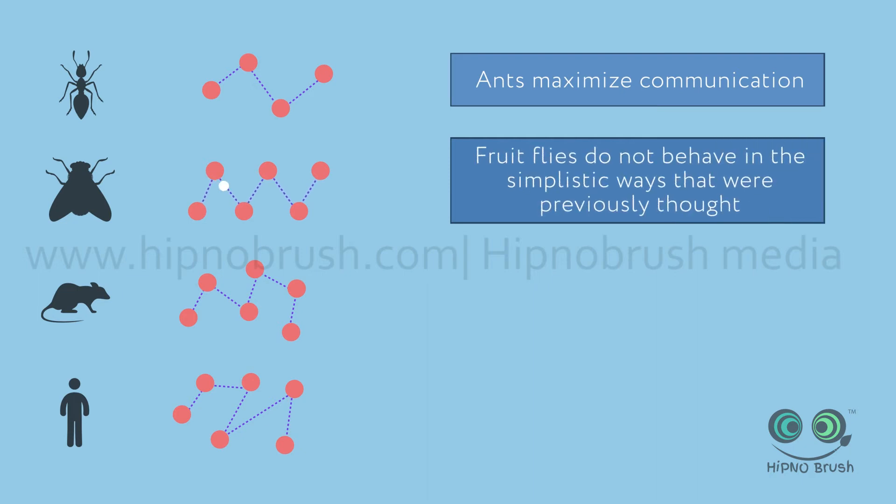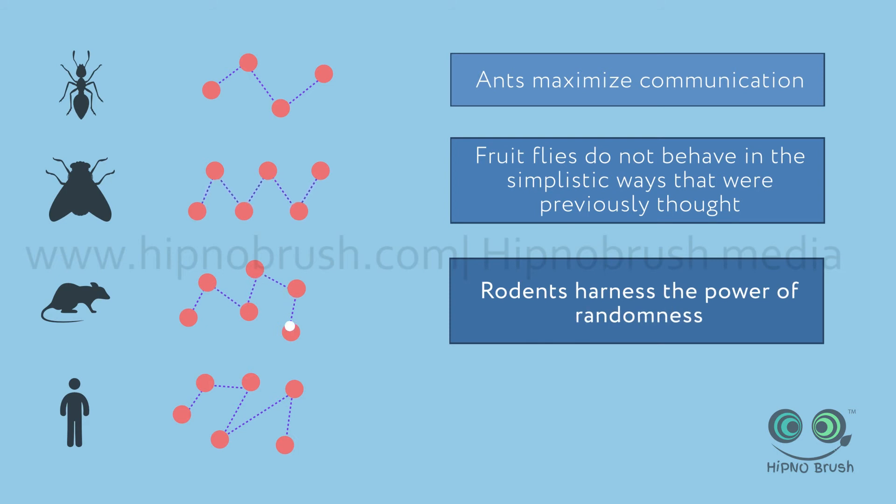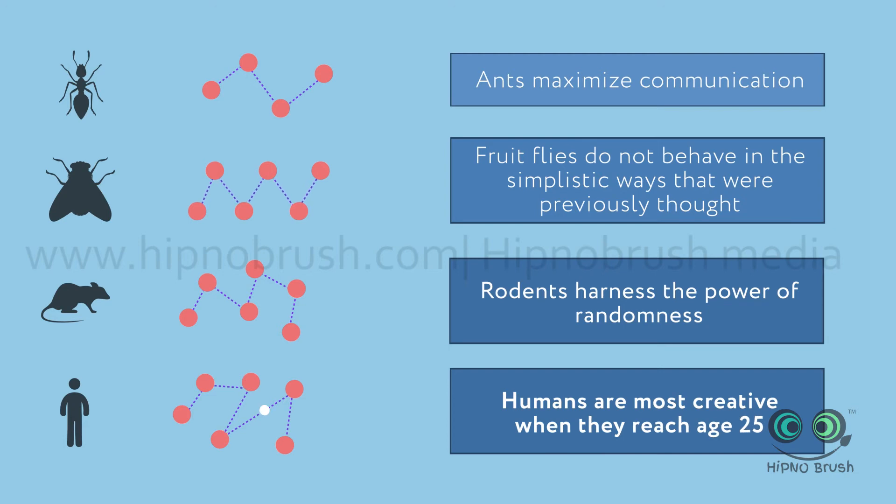Fruit flies do not behave in the simplistic ways that were previously thought. Rodents harness the power of randomness when outsmarted by artificial intelligence. And humans are most creative at generating randomness when they reach age 25.